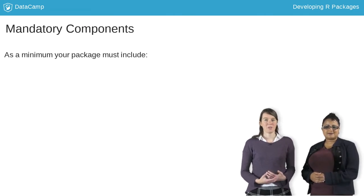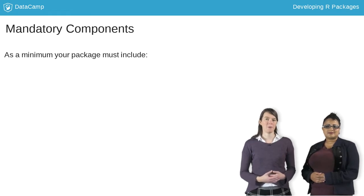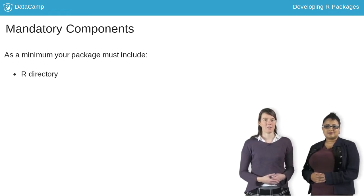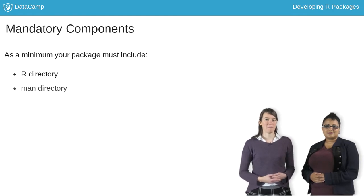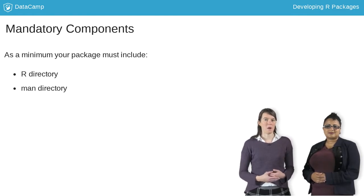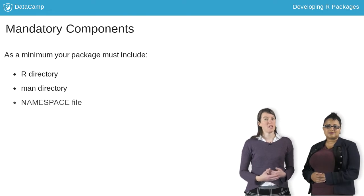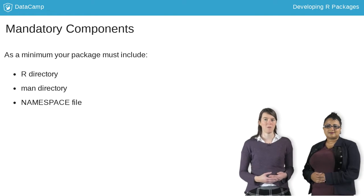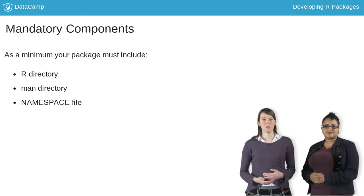But you don't have to include all of this. In fact, there are only four things that must be in a package. Firstly, the R directory where you put all of your R code. Then there's the man directory where all of the documentation is stored. The namespace file contains information about functions that your package imports from other packages and functions that your package makes available to its users.